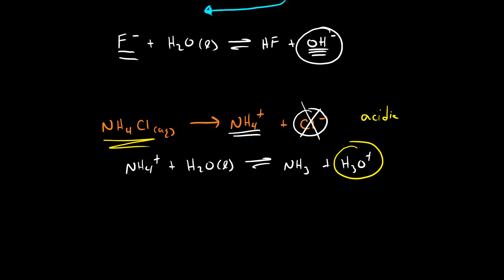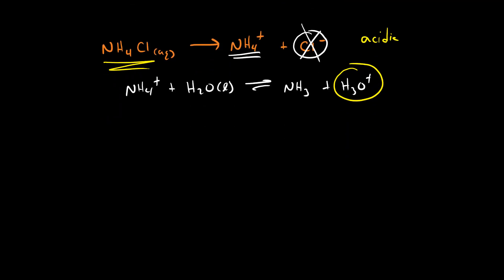The big punchline here is that if the ionic compound contains a weak acid, the solution will be acidic. If the ionic compound dissolves in water and contains a weak base, the solution will be basic. Now let's imagine dissolving sodium bicarbonate in water. It's nice and soluble, and when it dissolves we produce a sodium cation and a hydrogen carbonate anion.